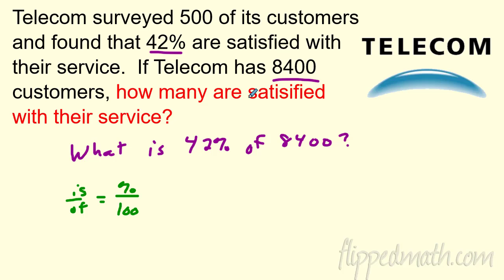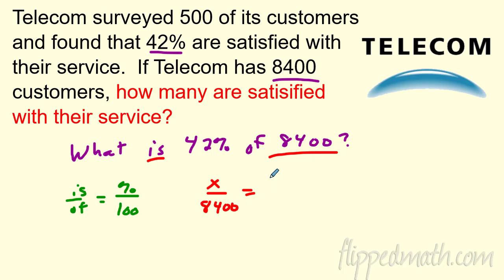So what are we going to do? We don't know the 'is' — we want to know what it is, so that's my variable: x. I know my 'of' is 8,400. And I'm going to say 42% — percent always goes over 100. Now I've got a little equation to solve.